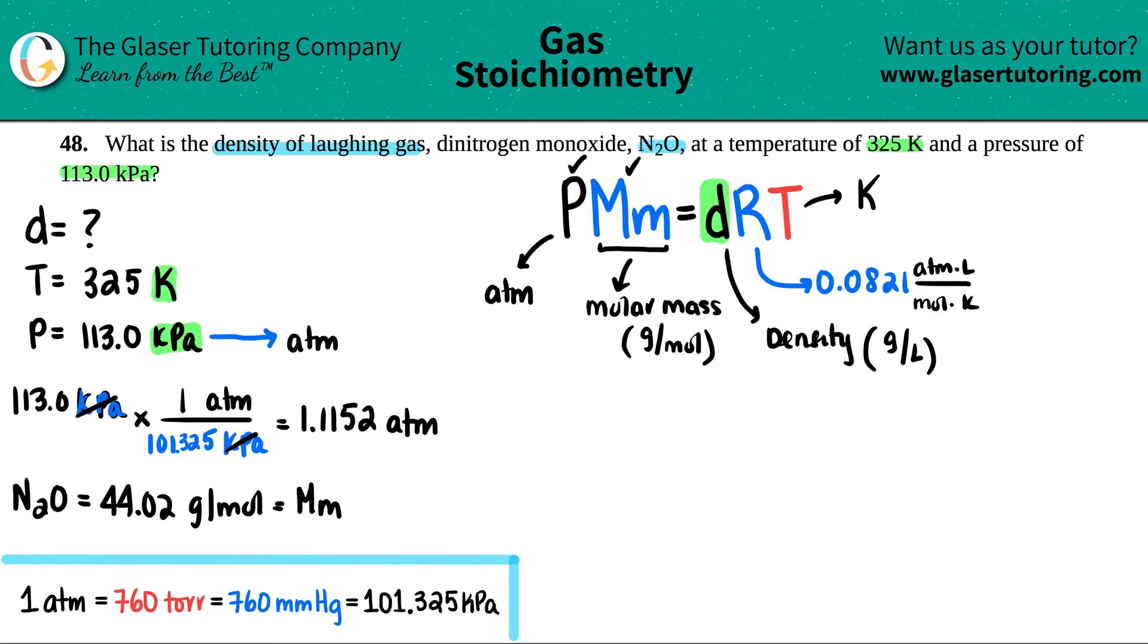So let's just plug everything in and solve for D. So the ATM is 1.1152. The molar mass of N2O, which is laughing gas, is 44.02. And this is going to equal X. I'll just label it as X. You can label it as D. It doesn't matter. Then we have our R value, 0.0821. And then I'm going to times it by the Kelvin value, 325.